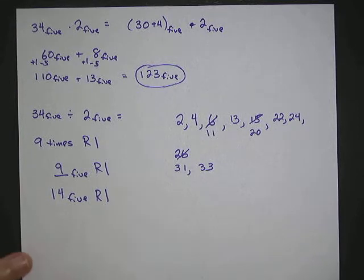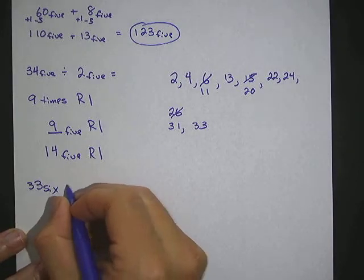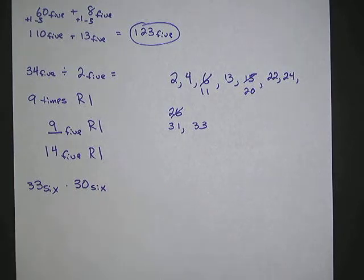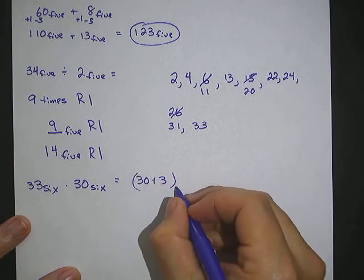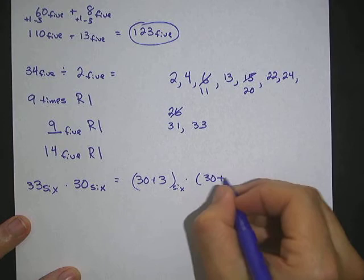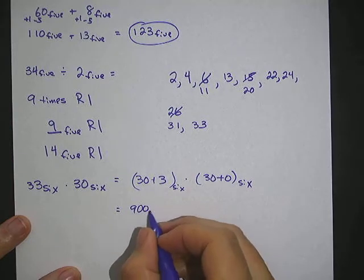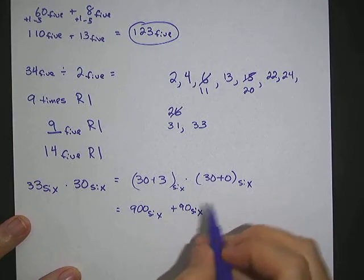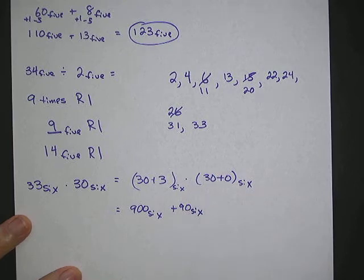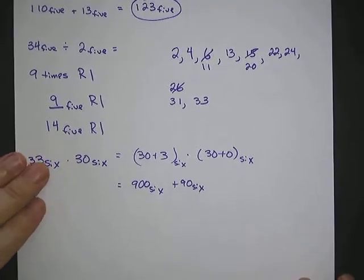Now let's do 33 base 6 times 30 base 6. We'll do this the same way as before: rewrite it as 30 plus 3, base 6, times 30 plus 0, base 6. Distributing: 30 times 30 equals 900 base 6, and 3 times 30 is 90 base 6. The terms 30 times 0 and 3 times 0 are both 0, so we just have 900 base 6 plus 90 base 6.